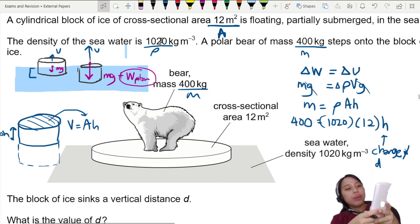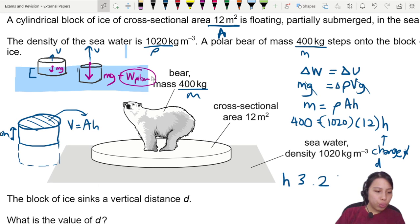Press calculator. We take 400 divide by 1020 and 12. We get 0.0, that's a very small value. This height is 3.268 cm.